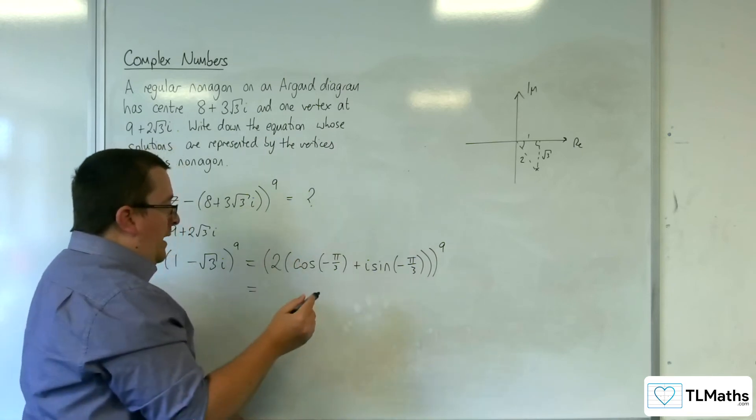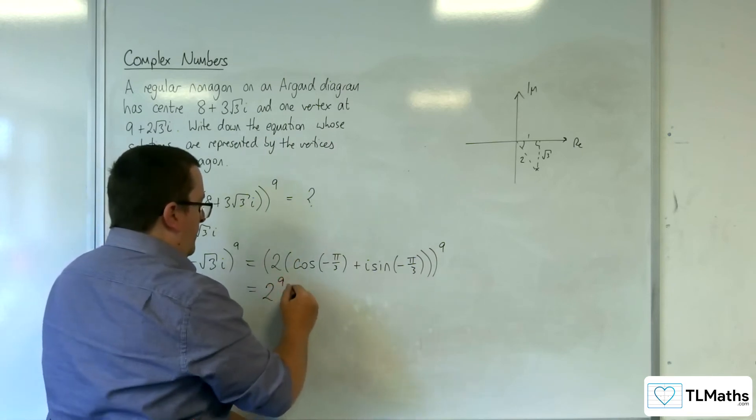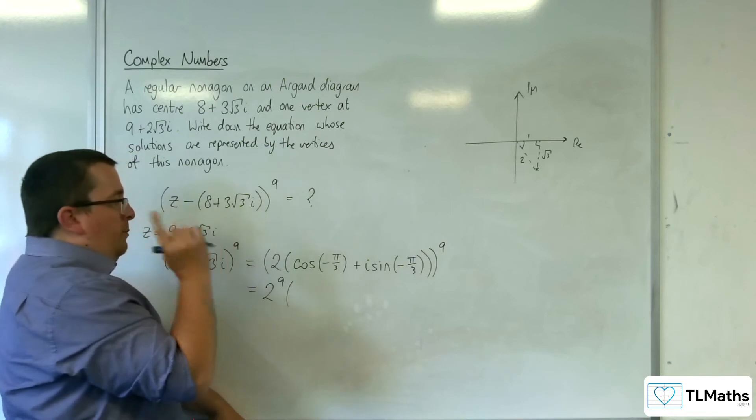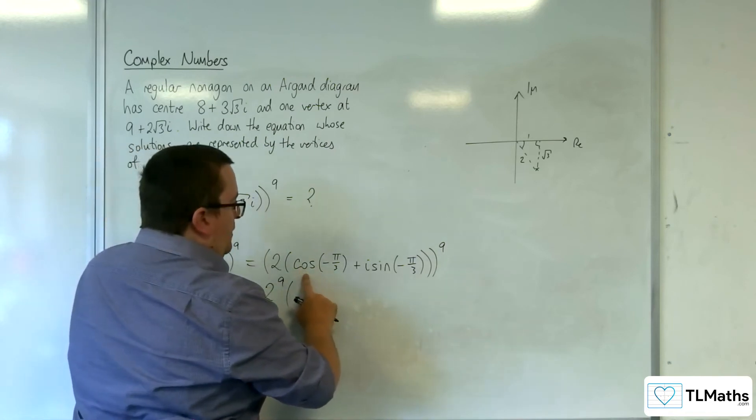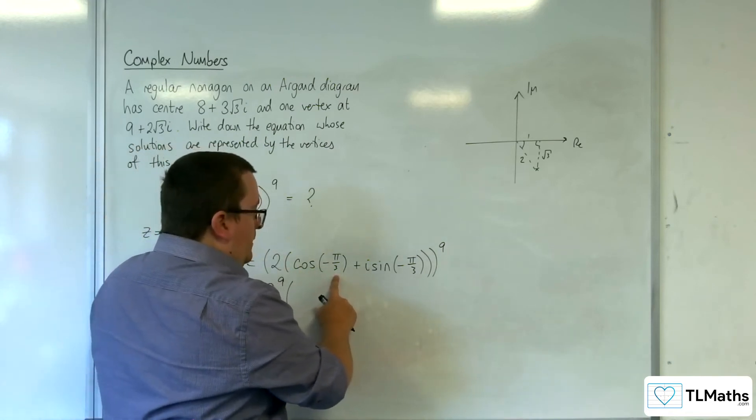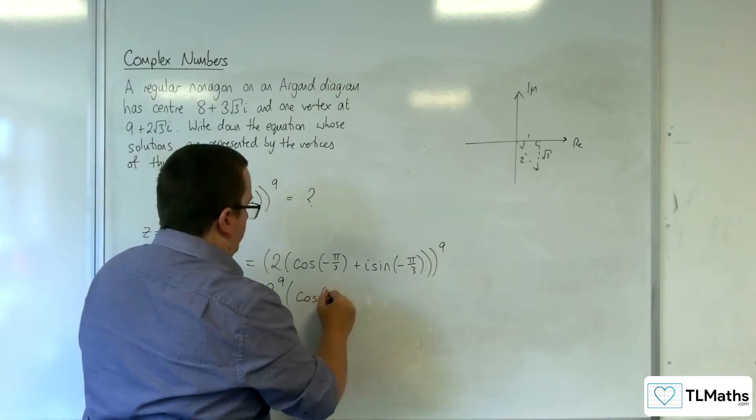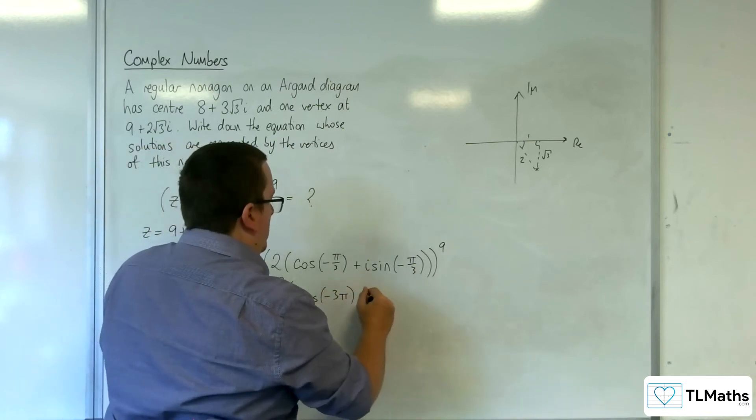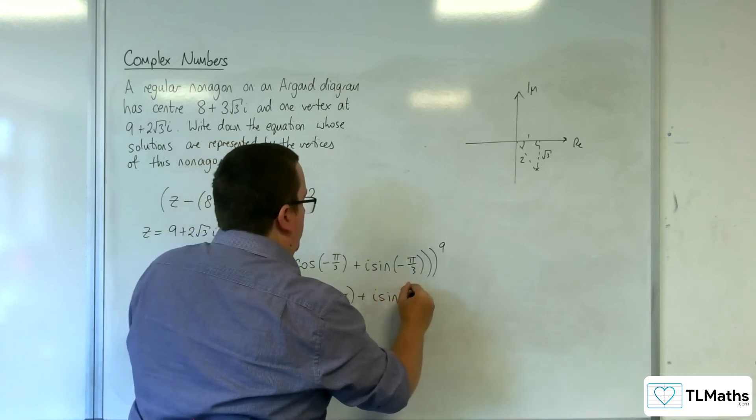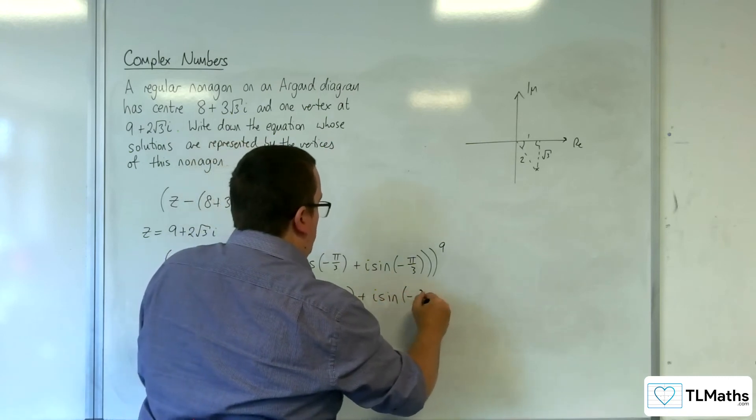So we've got 2^9, then De Moivre's theorem, we'll have cos(-π/3 × 9), so that would be -3π plus i sin(-3π).